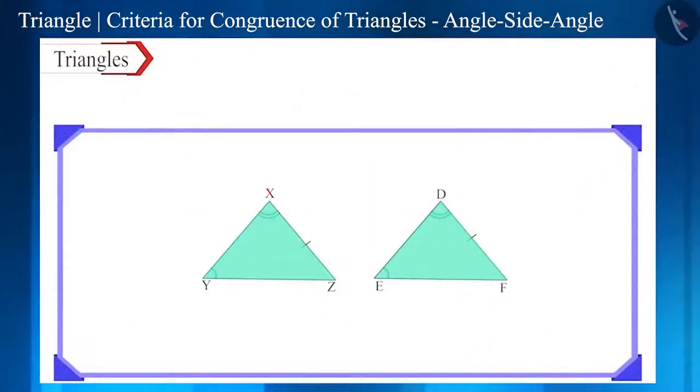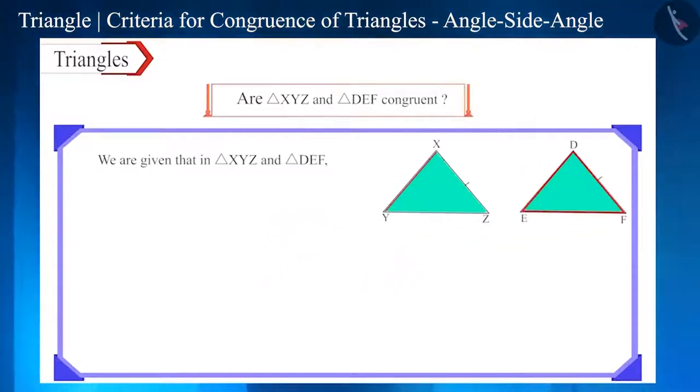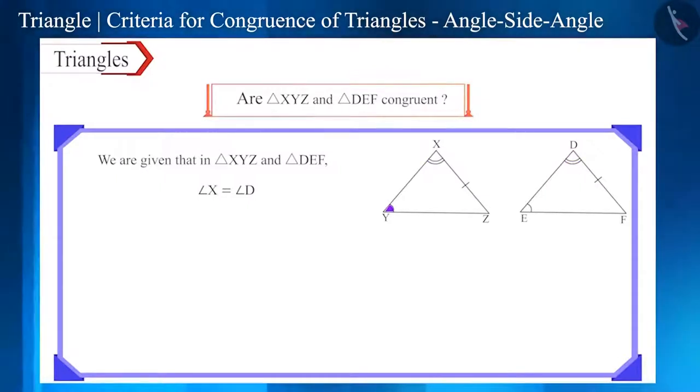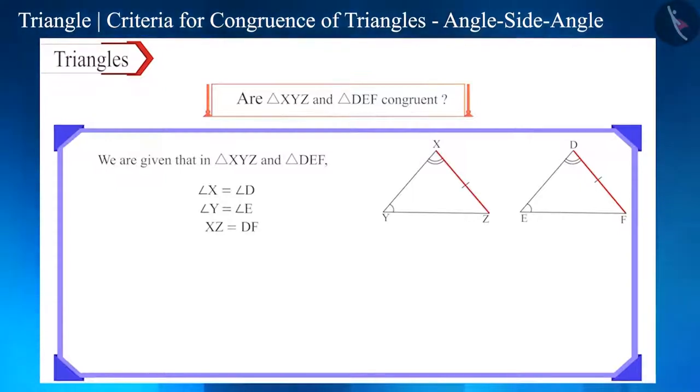Here, two triangles are given, XYZ and DEF. Look at the figures carefully and tell whether these two triangles are congruent. In both these triangles, both the angles, angle-X and angle-D are equal. Angle-Y and angle-E are equal, and side-DF and side-XZ are equal.